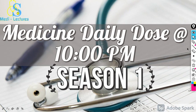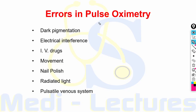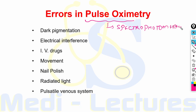Welcome to the fourth episode of season 1. In this episode we will discuss in brief about oxygen therapy. First of all, pulse oximetry is based on the principle of spectrophotometry, and there can be errors in pulse oximetry due to the following reasons: dark pigmentation, electrical interference, IV drugs, movement, nail polish, radiated light, and pulsatile venous system.